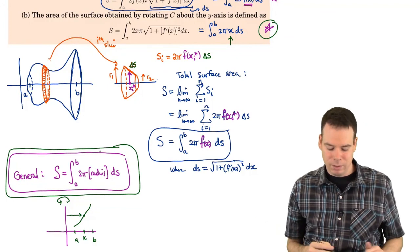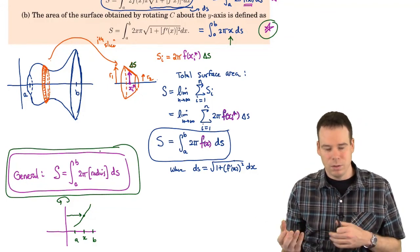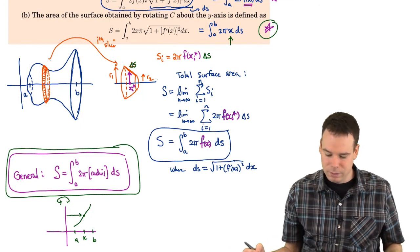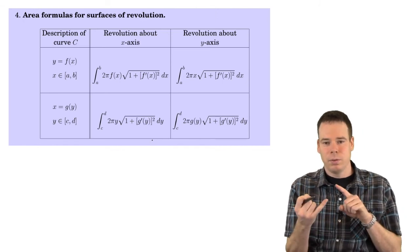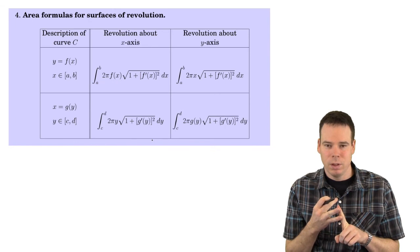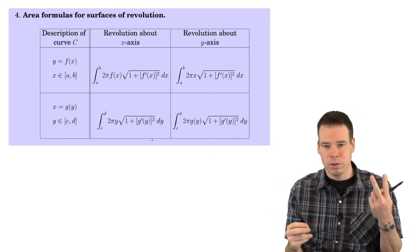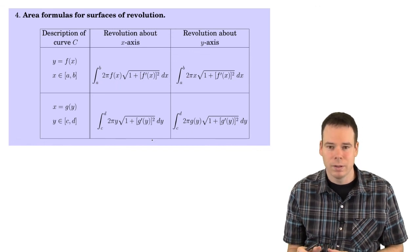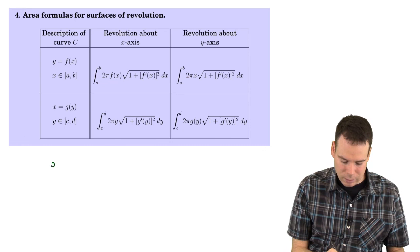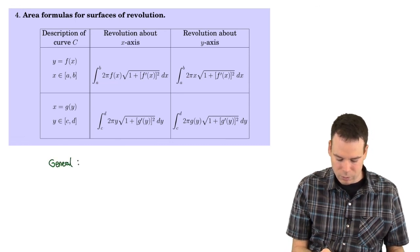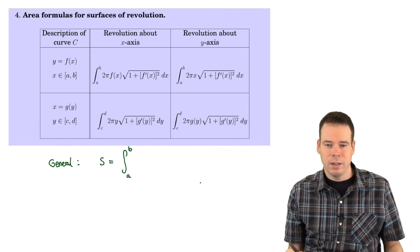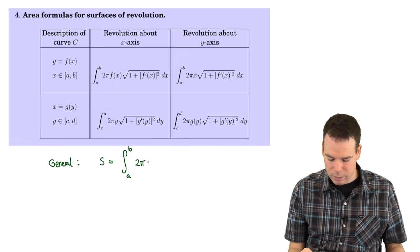We can summarize this in a table. There are two choices of axis (x or y) and two choices of integration variable (x or y), giving four different specific formulas. But they are all special cases of the general formula: S = ∫ₐᵇ 2π · r · ds, where a and b are the start and end points of whichever variable you're working with, and r is the radius — the distance from the curve to the axis of rotation.